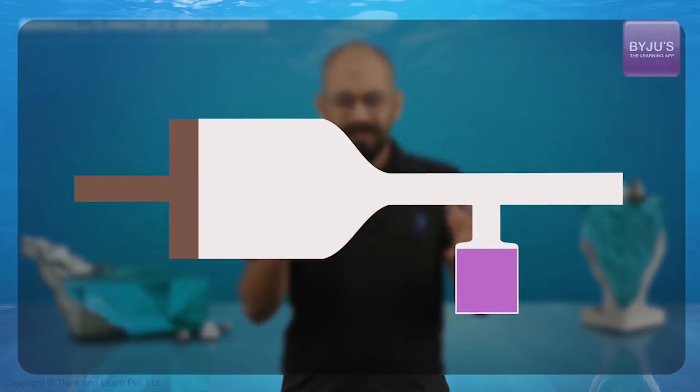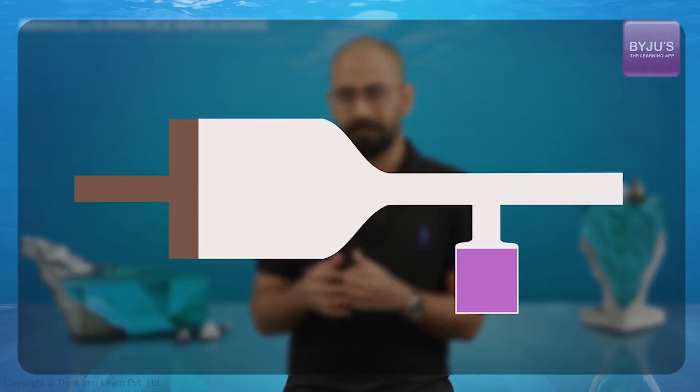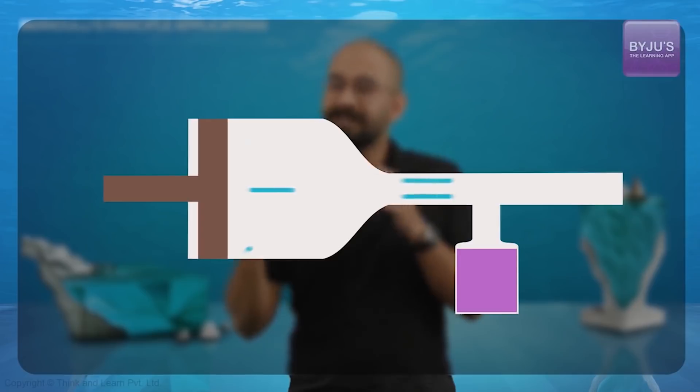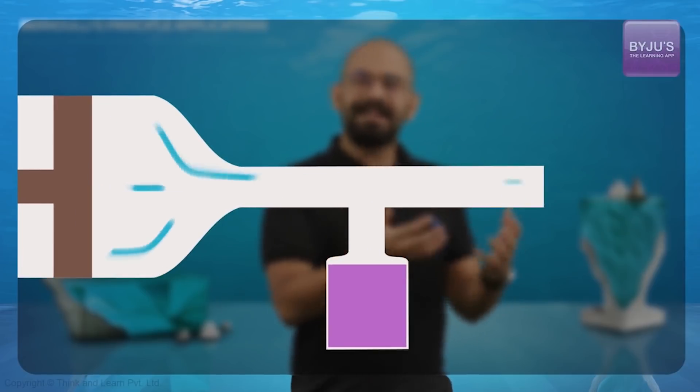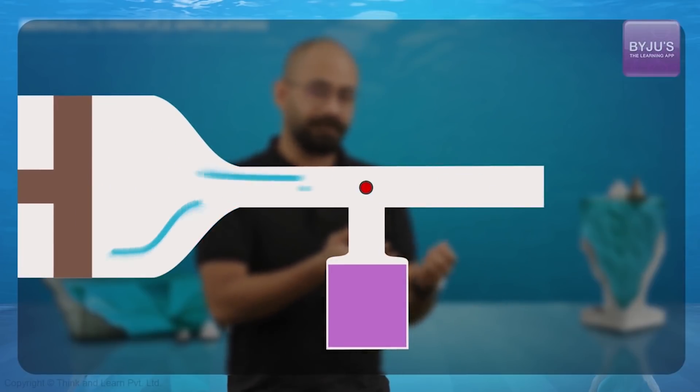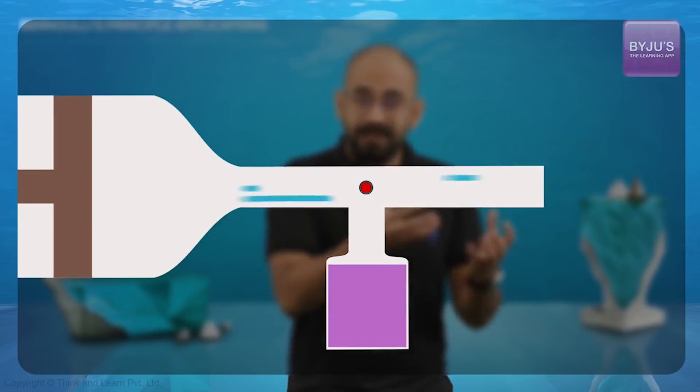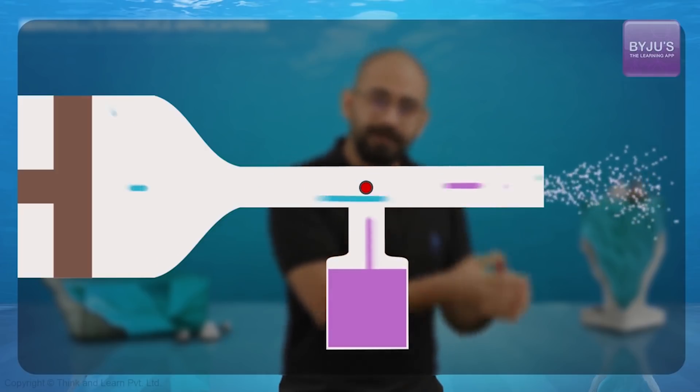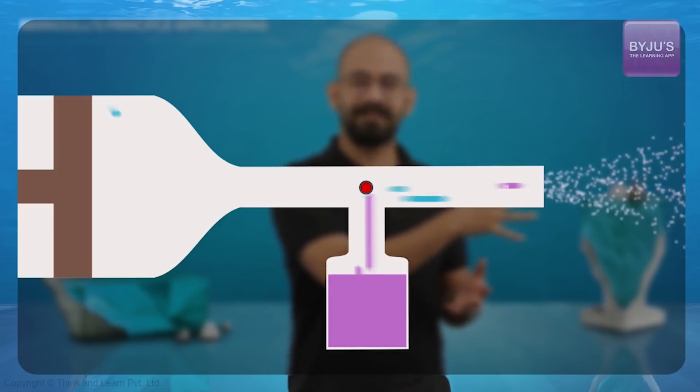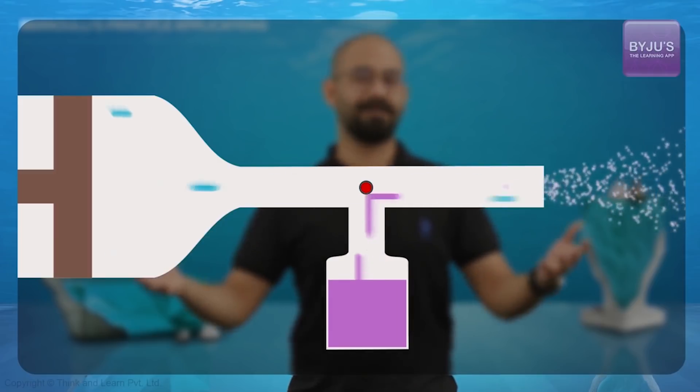Now, this is a simple representation of an aspirator pump. Now, what happens is when you push the piston this side, you are basically pushing the air and increasing the speed of the air at this point. Now, therefore, because the speed increases, the pressure at this point reduces. And that sucks out the liquid which is over here and sprays it. And simple, that's simply how it works.